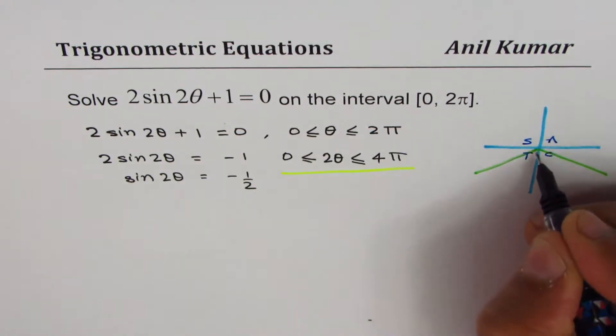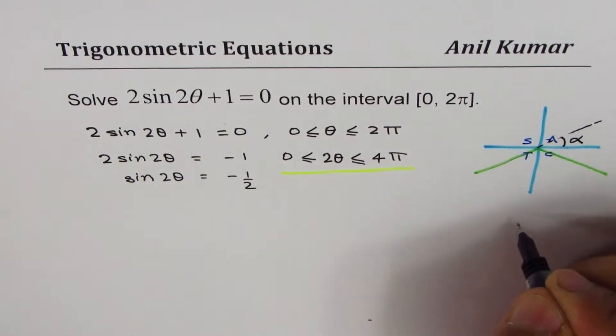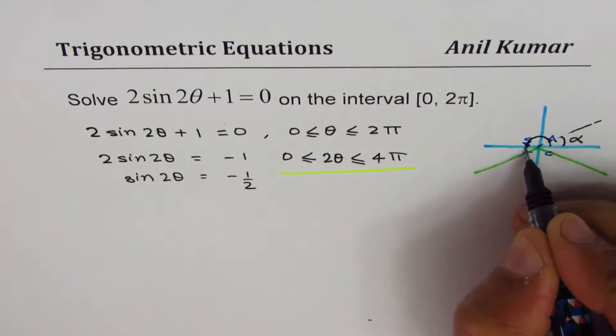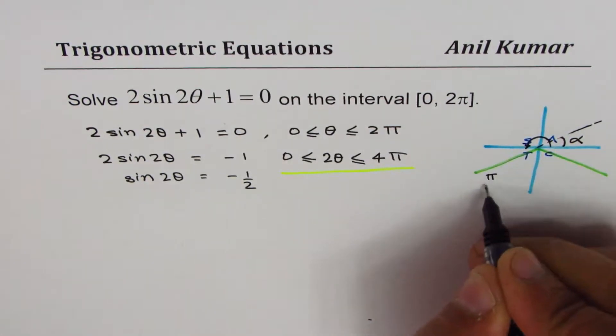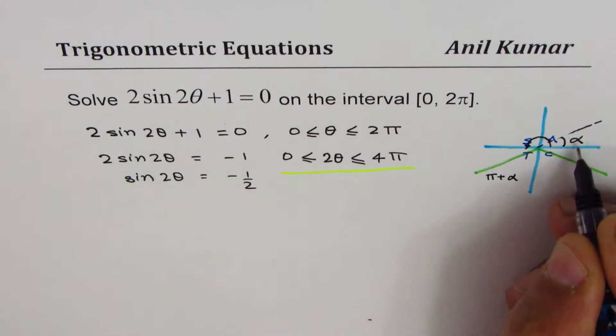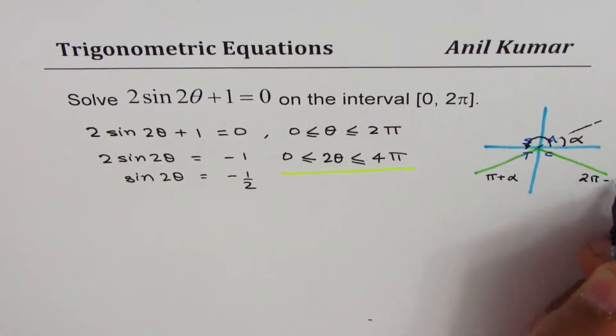We need to find the acute angle α. So one of the solutions will be π + α, the other one will be 2π - α. These are my two solutions.